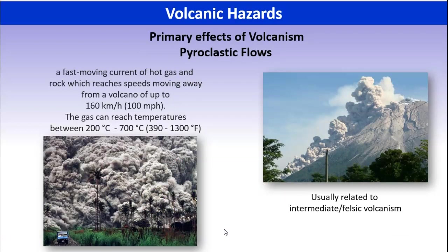A pyroclastic flow is another hazard. We're going to pin this hazard to the stratovolcano. These are our intermediate, and yes, some felsic volcanism — because of the explosiveness. A pyroclastic flow is a collection of gases and rock and debris. It can be formed in a couple different ways, but certainly a blast is one way to initiate it.